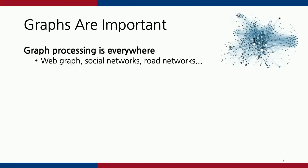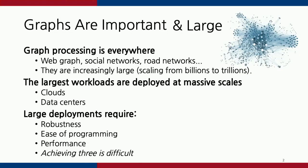Graphs have been an important data structure to represent different types of real-world relationships. For example, we have web graphs, social networks, road networks, and people run different graph algorithms on those graphs. Real-world graphs have been increasingly growing large, and currently they scale from billions of edges to even trillions of edges. You can process small-scale or intermediate-scale graphs on a single machine or small cluster, but the largest graph workloads are deployed at massive scales, specifically in public clouds and data centers.